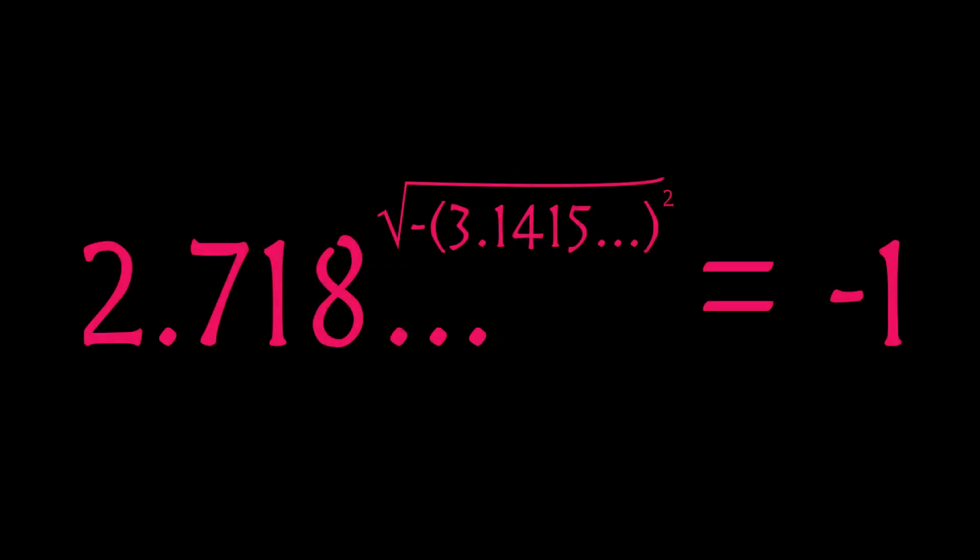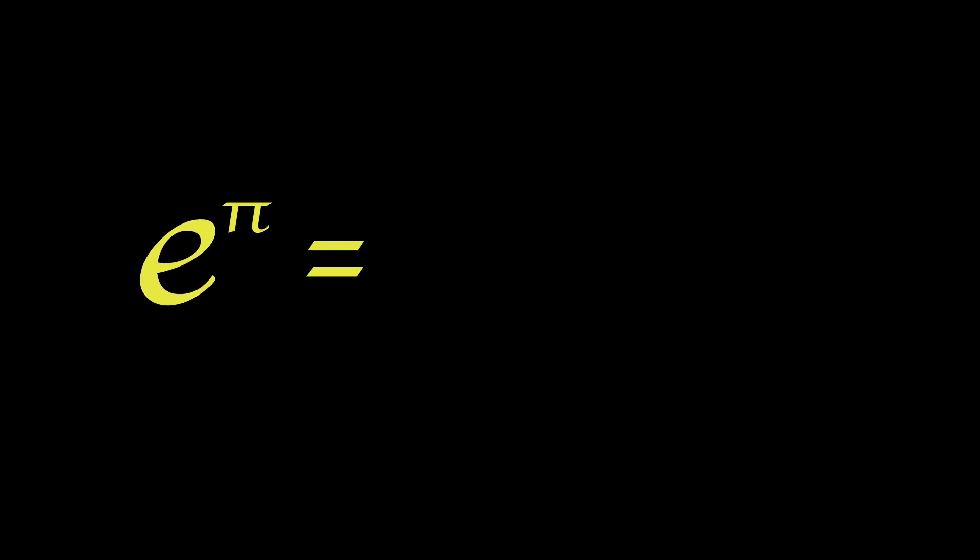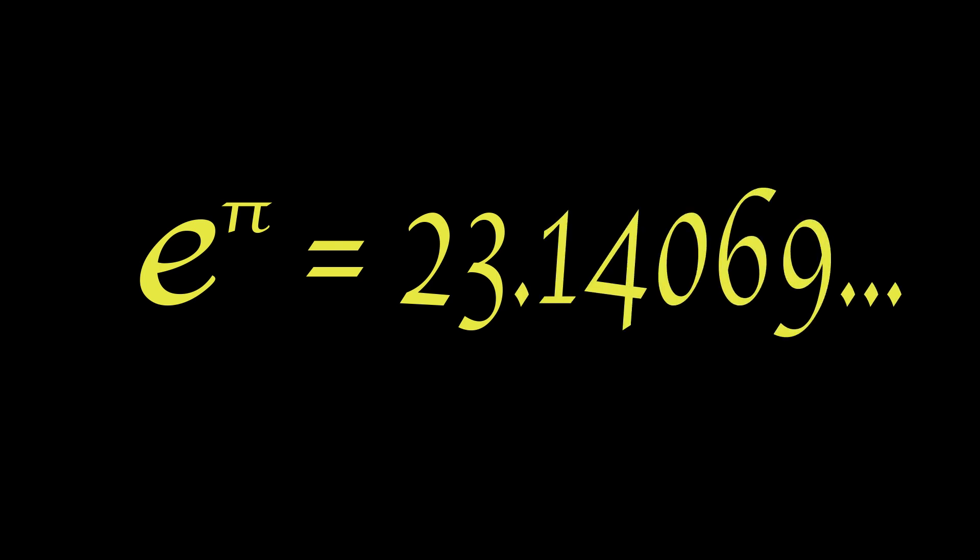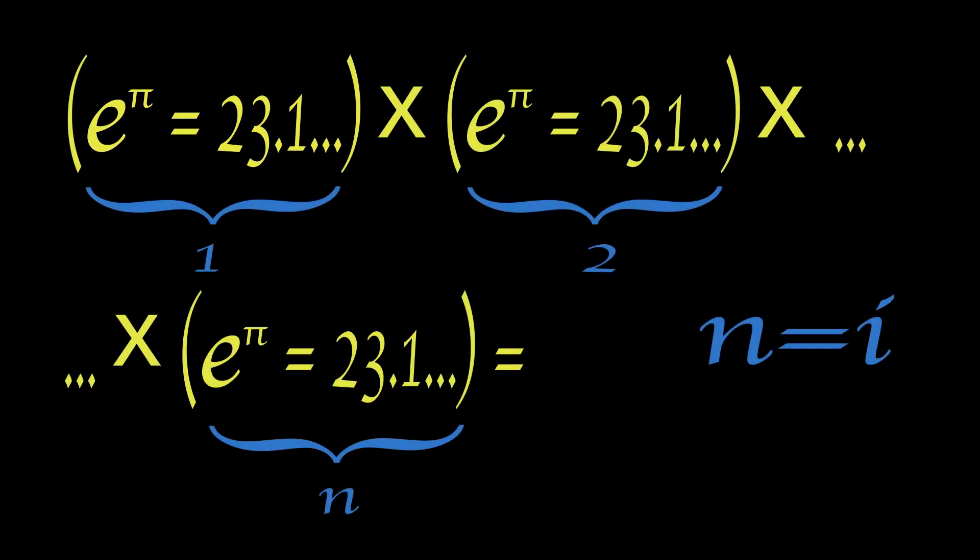These seem like a bunch of weird arbitrary numbers put together. Let's just consider e to the power of pi. That ends up as this other irrational number 23.14069 and so on. Yet somehow this multiplied by itself an imaginary number of times becomes negative one. Why is this?